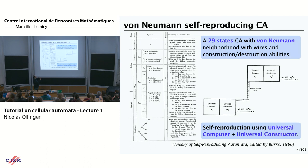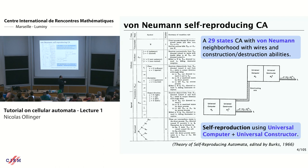There is a universal constructor, which is a finite part of the configuration with some kind of arm that you can move. The arm can be put anywhere and can modify the configuration — a universal engine that is able to construct anything. It receives instructions from a universal computer. You bind them together, take a description of the universal computer for the constructor, take a description of the universal constructor, put them together, write them on the tape and cut them. Then you have a machine that would, after some time, replicate itself.